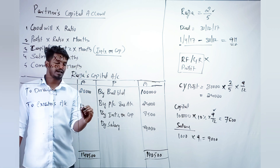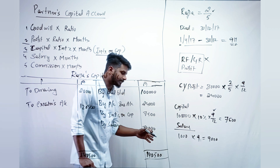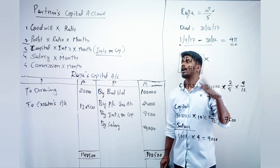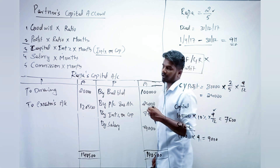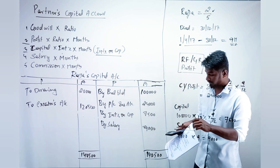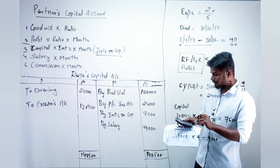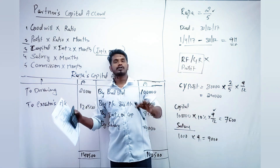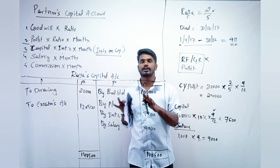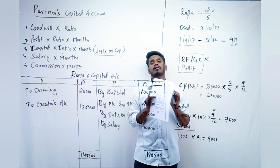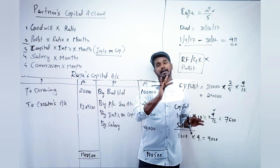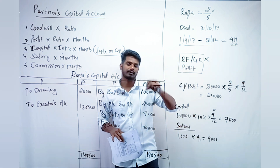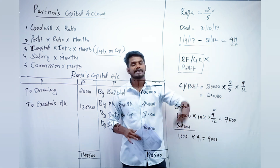So 1,20,500 is transferred to the executor's account — that's it! Your first question on partner's capital account (death of a partner) is done. We will do two more questions including the executor's account. Thank you for watching. If you have any doubts, ask through Instagram — the link is in the description. Please subscribe and share with your friends so they can also get good marks in accounts!